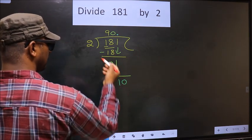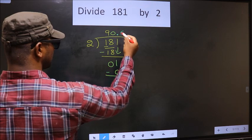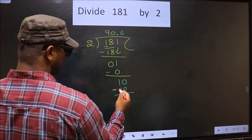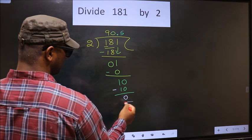Here we have 10. When do we get 10 in 2 table? 2, 5, 10. Now you subtract. 10 minus 10, 0.